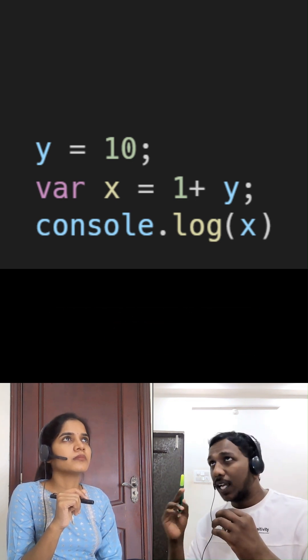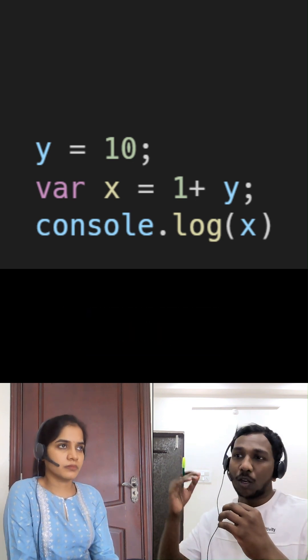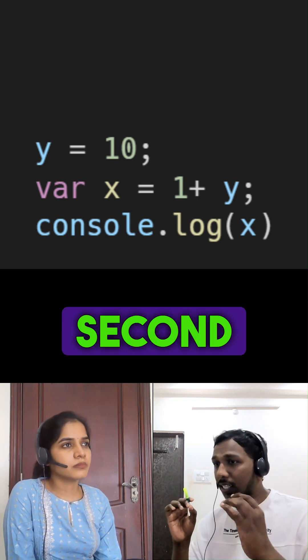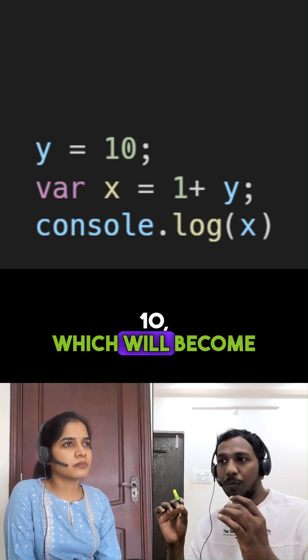Due to this, in the second line, when it executes 1 plus y, it will automatically get the value from the global object. And in the second line, the value of x will become 1 plus 10, which will become 11.